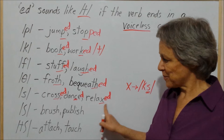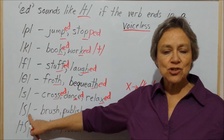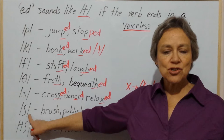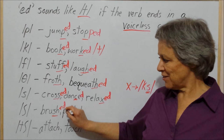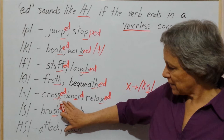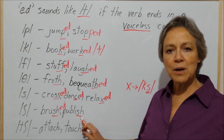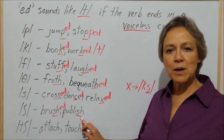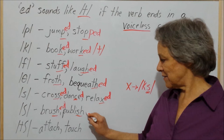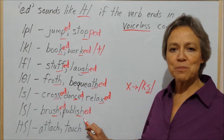If the verb ends in the /ʃ/ (sh) sound, the ed will sound like /t/. The /ʃ/ sound often looks like 'sh'. So if I add ed to 'brush', I get 'brushed'. When I add ed to 'publish', I get 'published'.